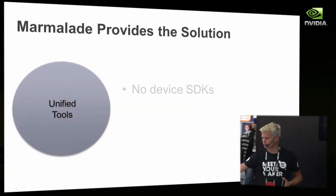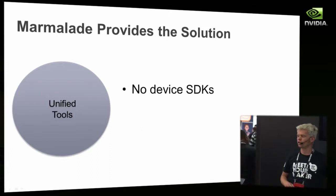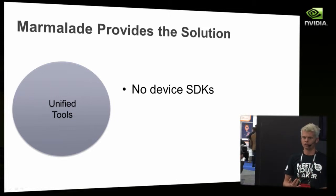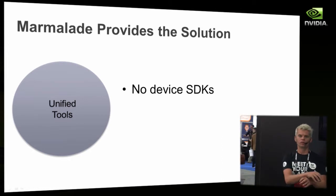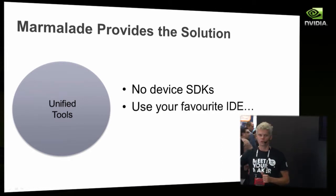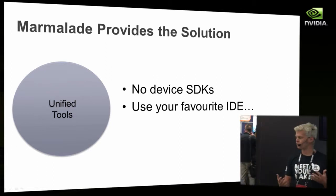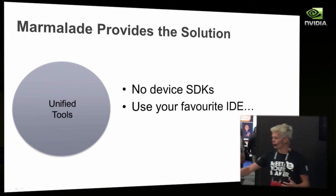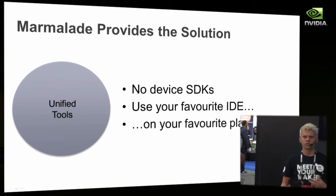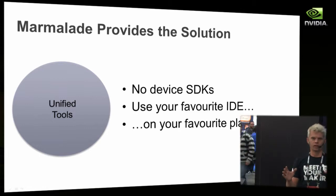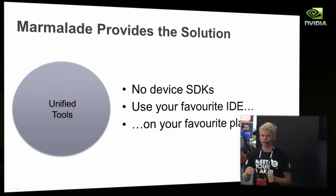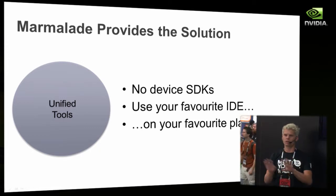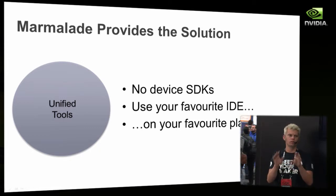We provide an SDK that allows you to not install any other SDKs. You don't need to install the Android SDK, the iPhone SDK, or any of the SDKs for the platforms you're targeting. Just one SDK and one set of tools to target all those platforms. You can use your favorite tools — Visual Studio or Xcode — on your favorite platform. If you're targeting iPhone, you don't need a Mac. You can use Windows Marmalade to produce iPhone games with no Mac involved.